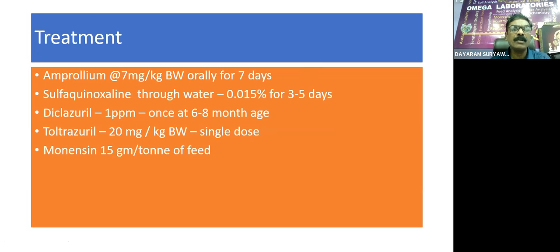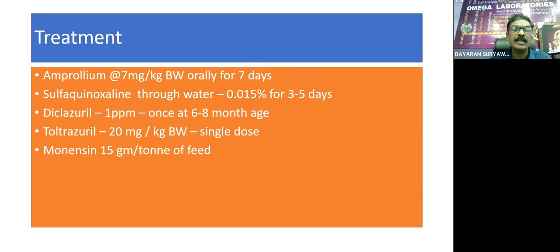Treatment options: Amprolium at 7 mg per kg body weight continuously for 7 days without break. Sulphaquinoxaline through water at 0.015% concentration for 3 to 5 days. Diclazuril at 1 ppm solution as a single dose at 6 months of age. Toltrazuril at 20 mg per kg body weight as a single dose. Monensin at 50 g per ton of feed as a preventive dose for all animals.